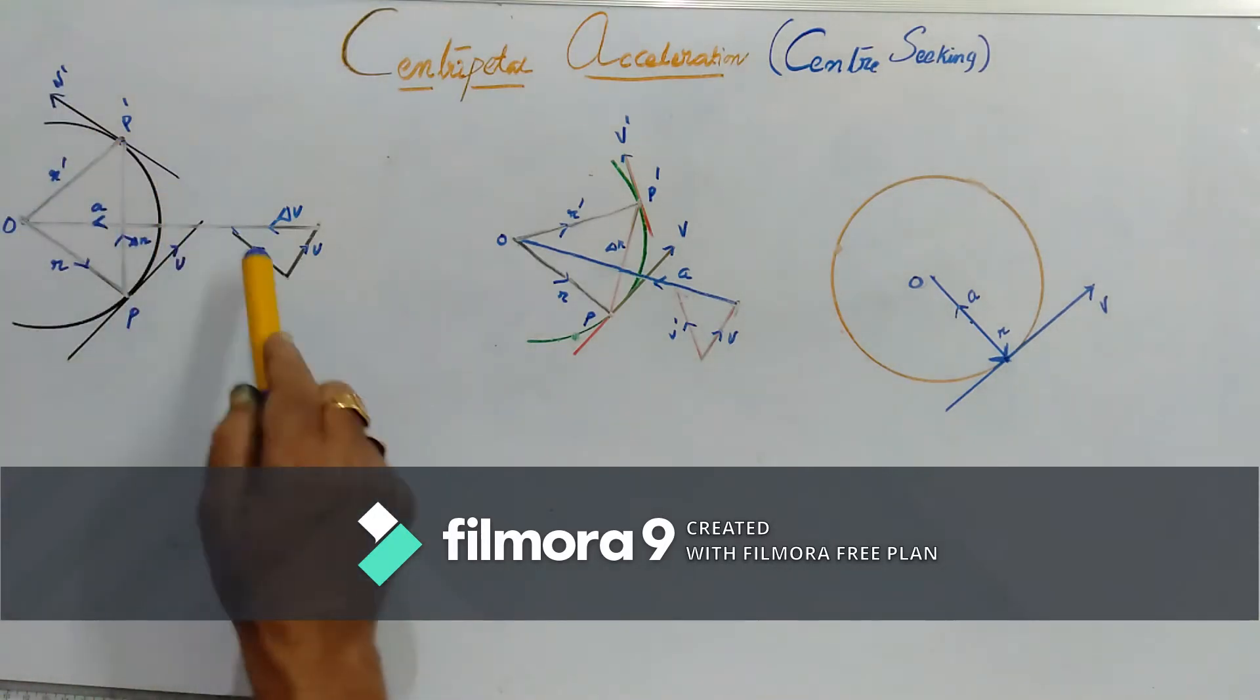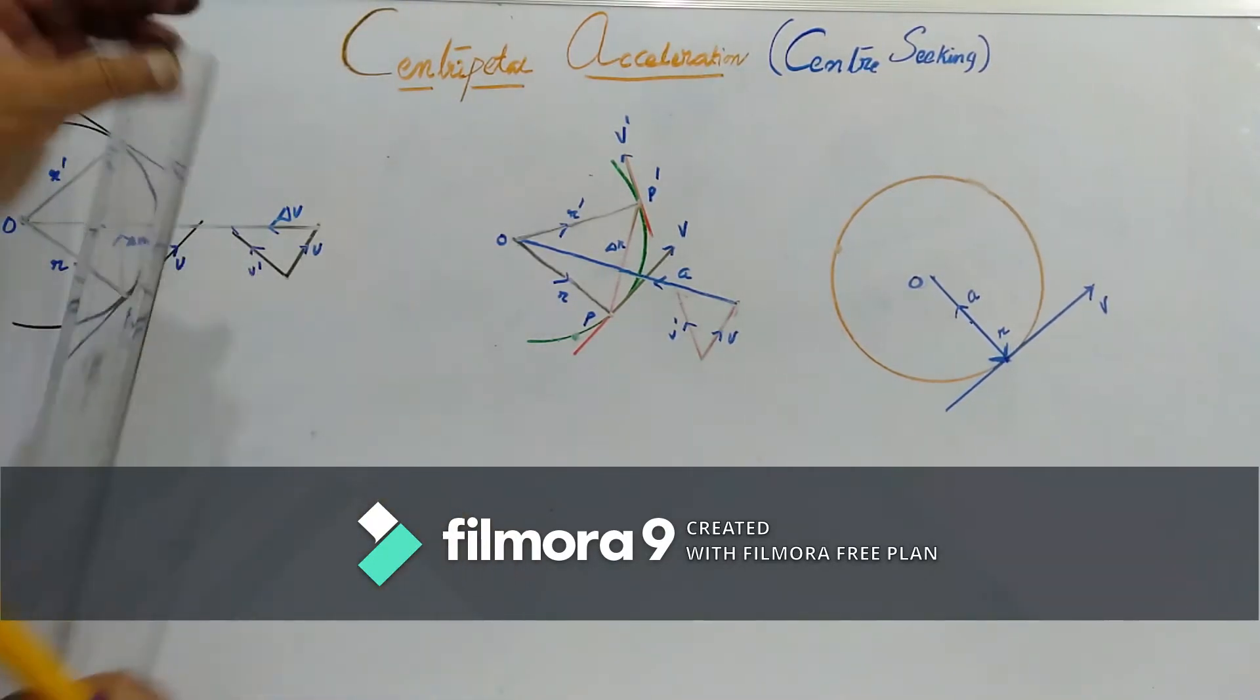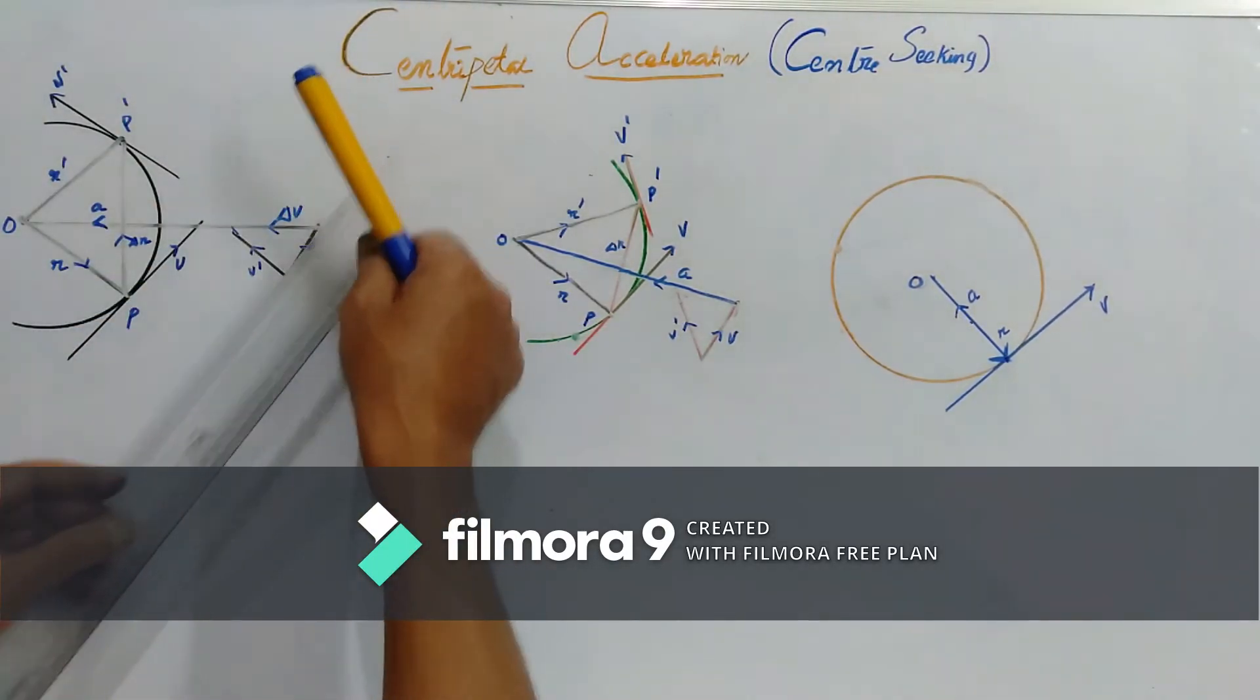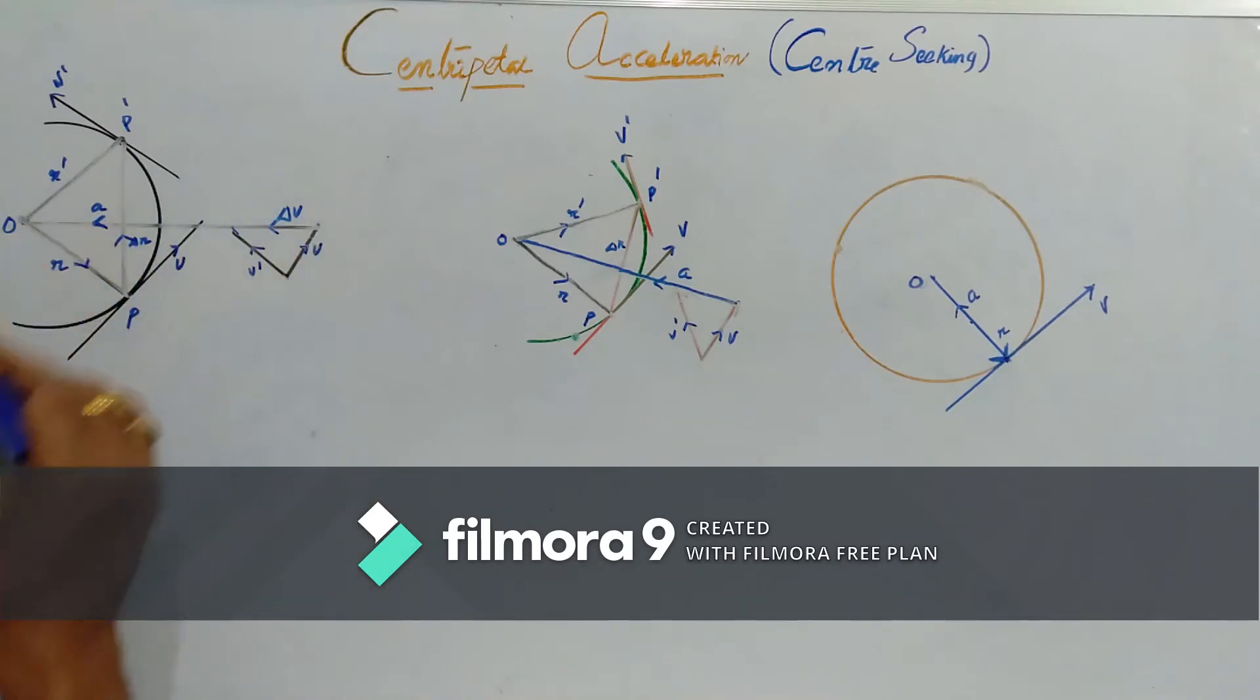Now, if I draw the parallel lines to V and V' we can draw always the parallel vectors and then we can take the difference of these two by using the vector triangular law of vector addition.